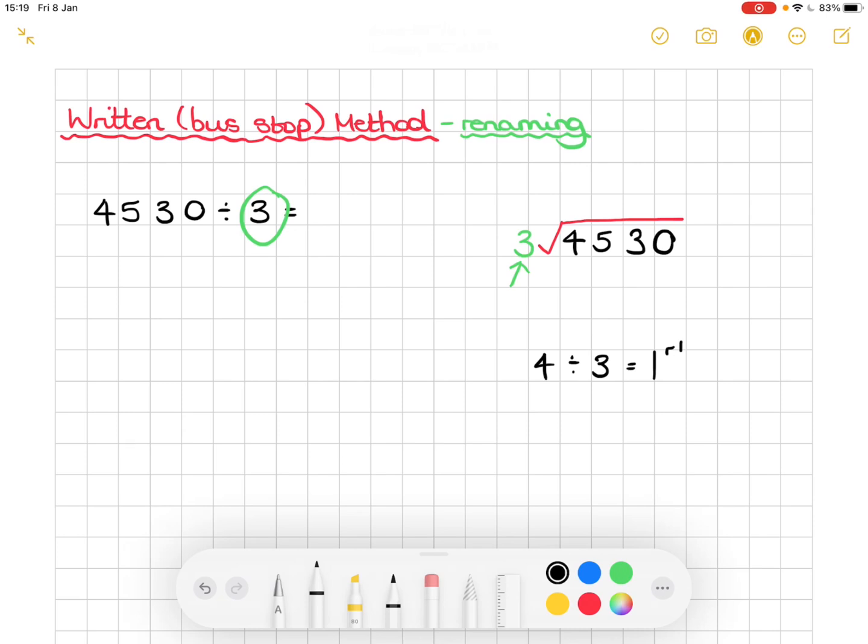Now we're going to show that in our bus stop method. So because it's one whole, it goes on top. And this remainder here, what we have left, we rename that into the next column. So that goes into our hundreds column. So now instead of 500, we have 1500.